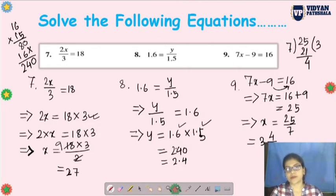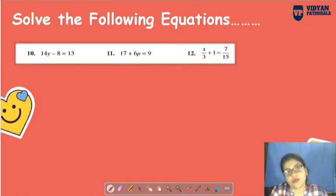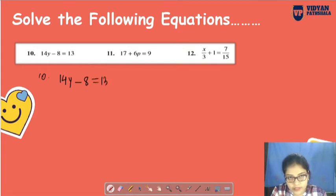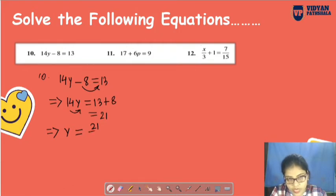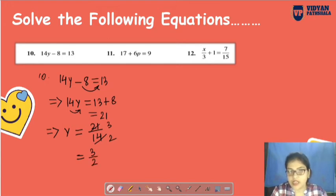Next questions - number 10: 14y minus 8 equals 13. So 14y equals 13 plus 8, that is 21. So y equals 21/14. 7 threes are 21, 7 twos are 14, so 3/2.